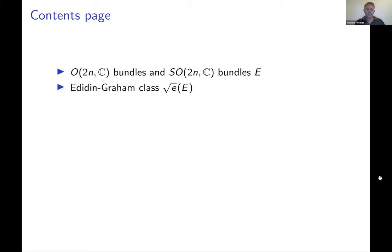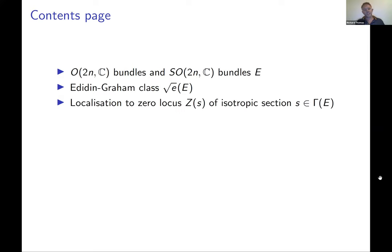I'll review quadratic bundles, oriented quadratic bundles, and then talk about the square root Euler class. Just as a normal Euler class is a characteristic class in Chow cohomology, and just as the ordinary Euler class of a bundle can be localized to the zeros of any section using Fulton-McPherson intersection theory, these classes can also be localized to the zero locus of an isotropic section.